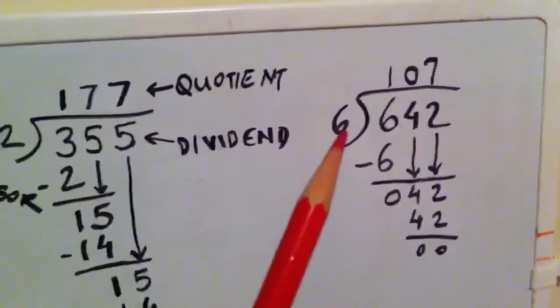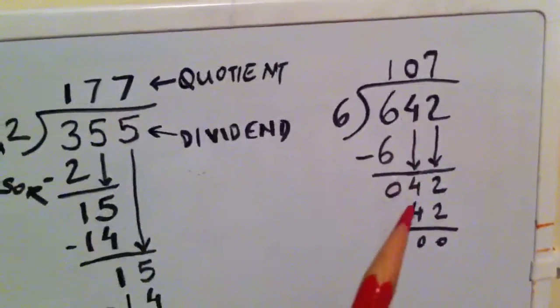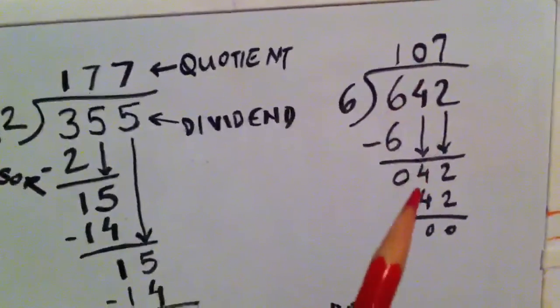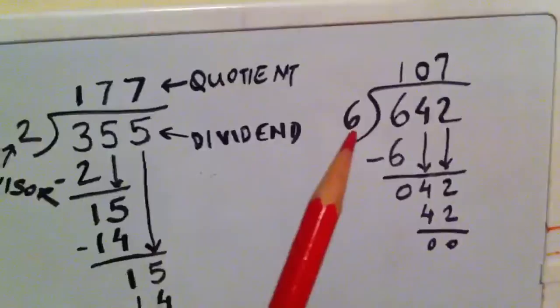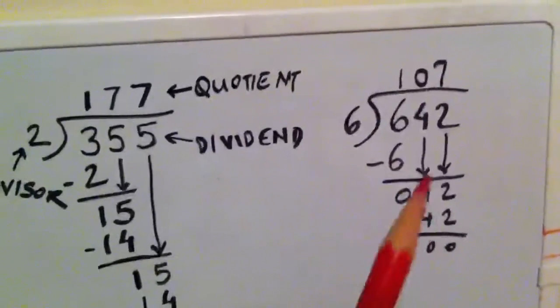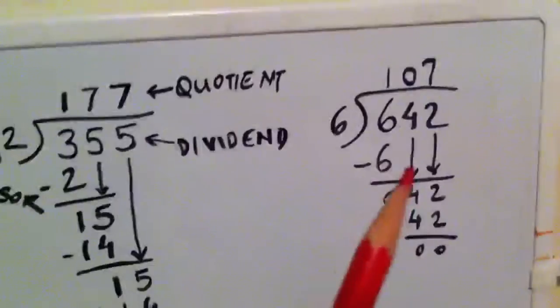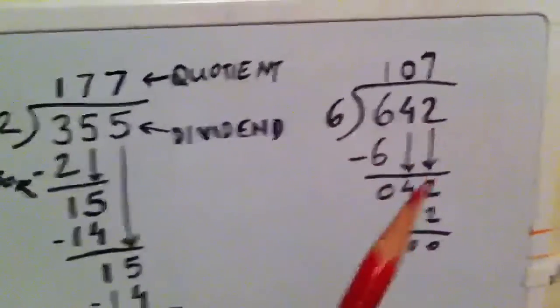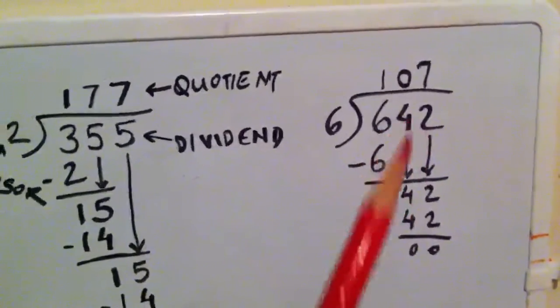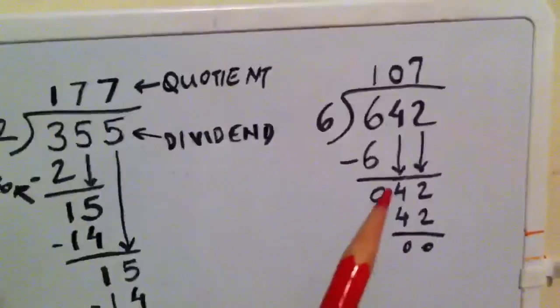So some people, like my son, say because 4 is smaller than 6 times 1 is 6, and 4 is smaller, so what we do is 6 times 0 is 0, so we place a 0 over there, which is another way to think about it. So either way, this is how you do a division wherein one digit does not help in getting the answer.